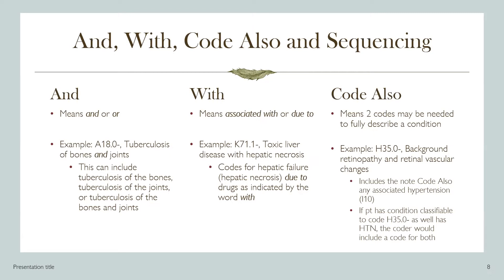Sequencing, or placing codes in a particular order, is an important part of ICD-10-CM coding. When sequenced correctly, the diagnosis codes should tell the story of why the patient presented for treatment. Typically, the diagnosis code primarily responsible for the services provided is sequenced before any others. If the patient has two or more diagnoses each requiring the same amount of treatment or management, then either diagnosis may be sequenced first. However, there are conventions in the tabular list that instruct coders how to sequence certain conditions and whether to include other codes — these are the and, with, code also, and sequencing instructions.